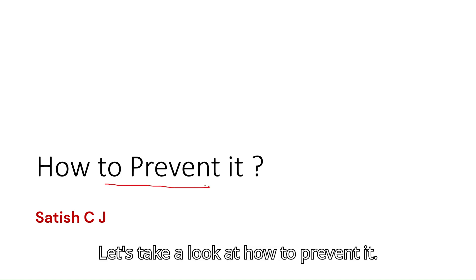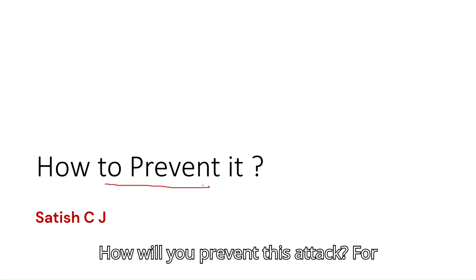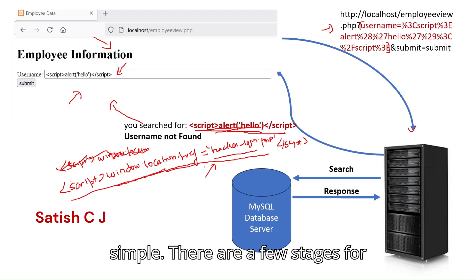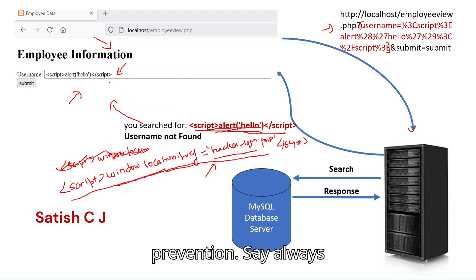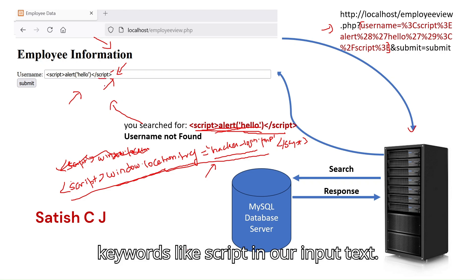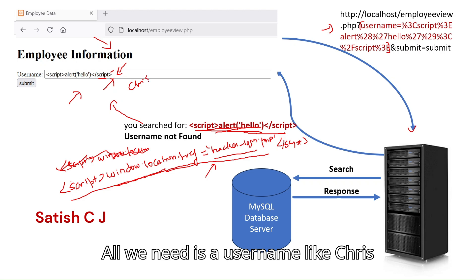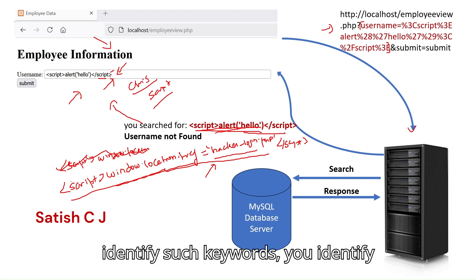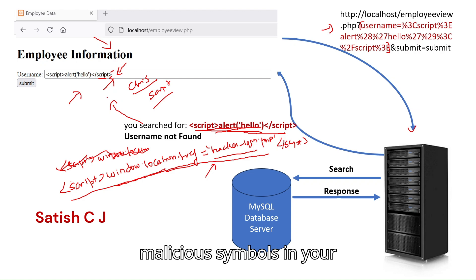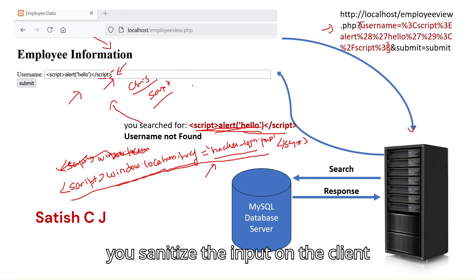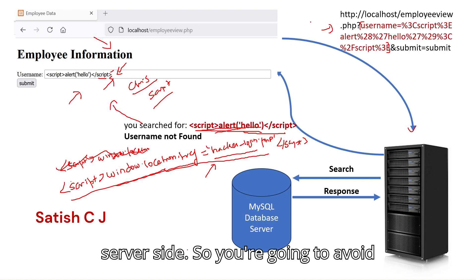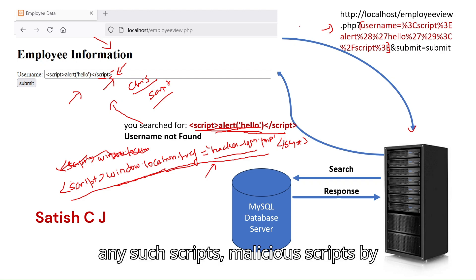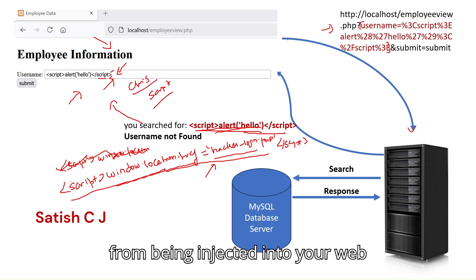To prevent this attack, there are a few stages. First, always sanitize your input — check for characters and keywords like 'script' in the input text. All we need is a username like chris or matthew; no legitimate user has a username that is a script. Identify such keywords and malicious symbols in your input, and sanitize the input both on the client side and the server side to avoid malicious scripts from being injected.